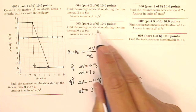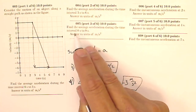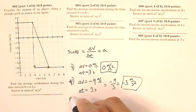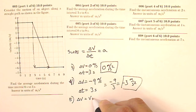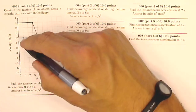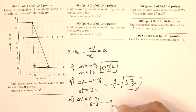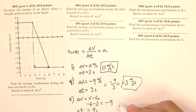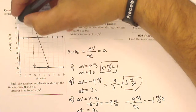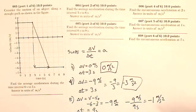Question number five asks for the average acceleration during the time interval zero to nine seconds. So I want the whole time from zero to nine seconds. I'm going from an initial velocity of three to a final velocity of negative six. For number five, my change in velocity is final minus initial: negative six minus three gives me negative nine. My amount of time is nine seconds. So negative nine meters per second divided by nine seconds gives me negative one meter per second squared. That's also the slope of a line drawn from start to end — my total rise over my total run — so it's a slope of negative one.